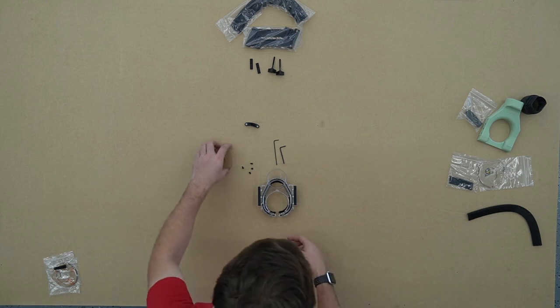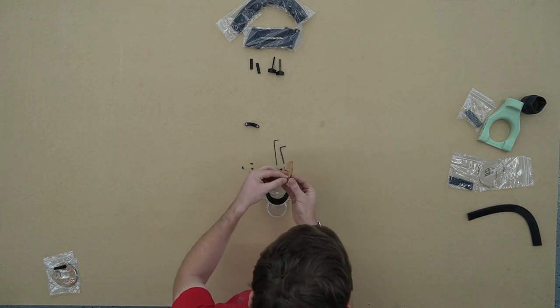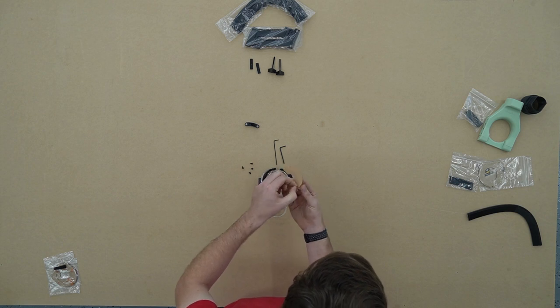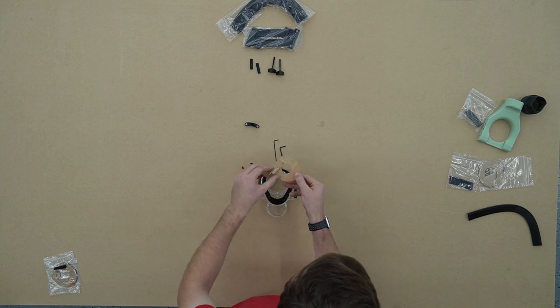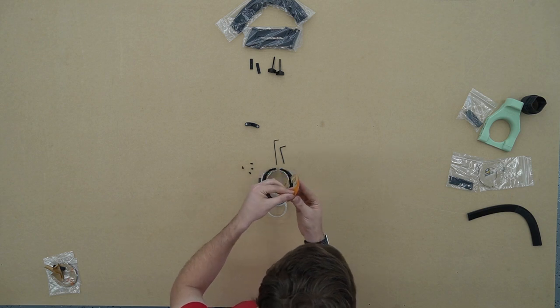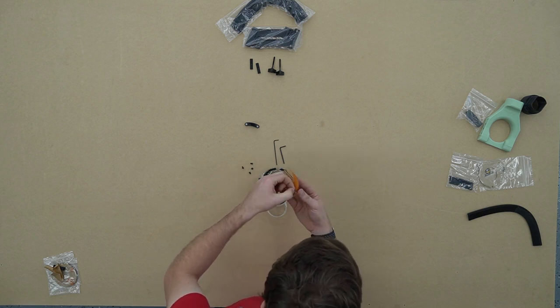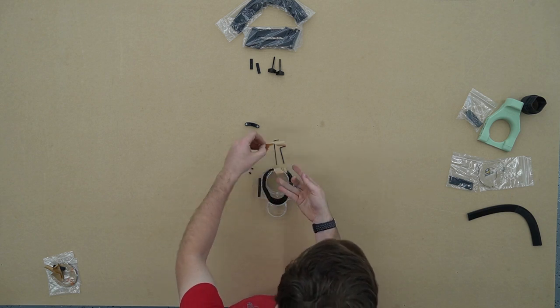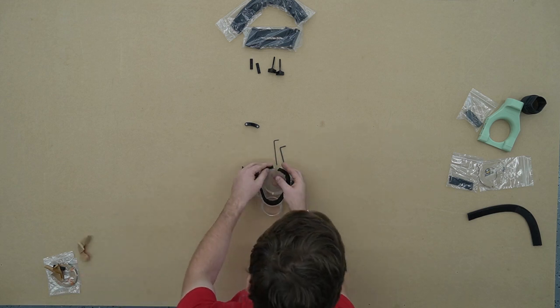Next we're going to install our router shield. We're going to flip over our Dust Boot and we're going to peel the protective layer off of the acrylic pieces. Once we have both sides of the protective film removed we can attach the shield to the Dust Boot using the three provided bolts and provided Allen key.